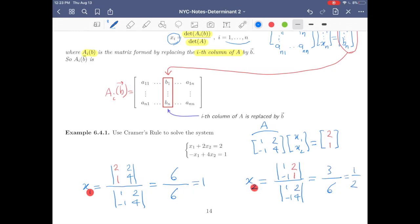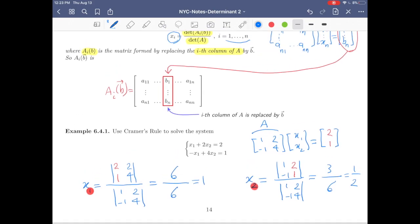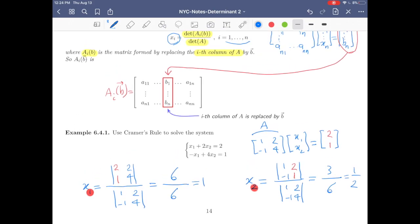So x2 equals three over six equals one half. That's it. So this is Cramer's rule. That's it for today and bye.